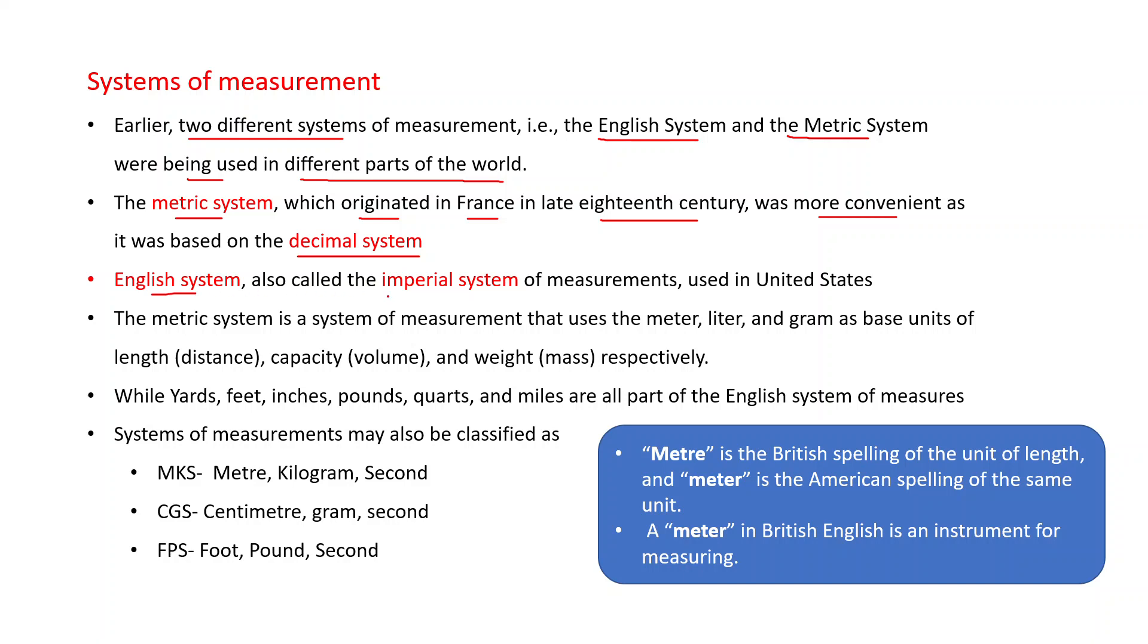English system, also called the imperial system of measurements, used in United States. The metric system is a system of measurement that uses the meter, liter, and gram as base units of length (that is distance), capacity (that is volume), and weight or mass respectively. That is meter used for length, liter is used for volume, and gram is used for mass.